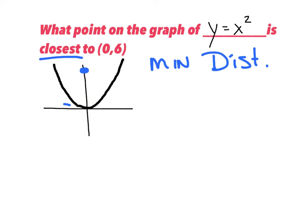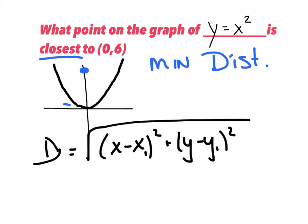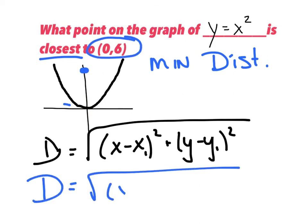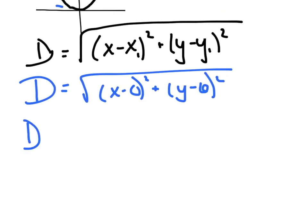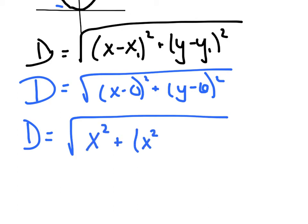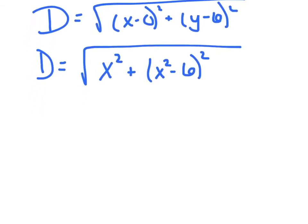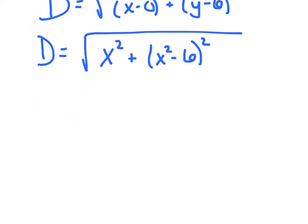Let's go ahead and get that distance formula set up. They gave us the point 0, 6, so that is the point I'm plugging into my x1 and y1. So I've got x minus 0 squared plus y minus 6 squared. You're halfway there at that point — you still have an x and a y, and you're just going to use that original equation as your secondary. So in place of y, we substitute x squared in, giving the square root of x squared plus x squared minus 6 squared.